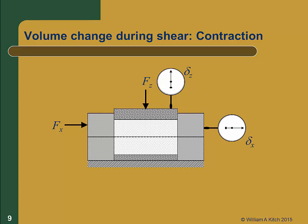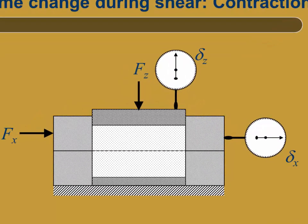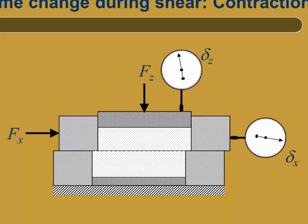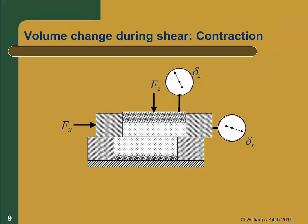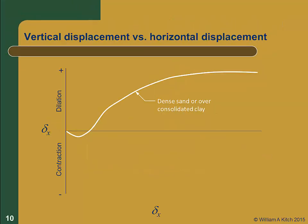The opposite of dilation during shear is contraction or a decrease in volume. This occurs when the soil is loose and gets denser during the shearing process. In this case, the displacement at the top of the specimen will be downward, as we see here. Here we compare the previous plot of vertical displacement versus horizontal displacement for a dense soil with that of a loose soil. The loose soil is contracting during shear or becoming denser, therefore the vertical displacement is downward, as we see here.